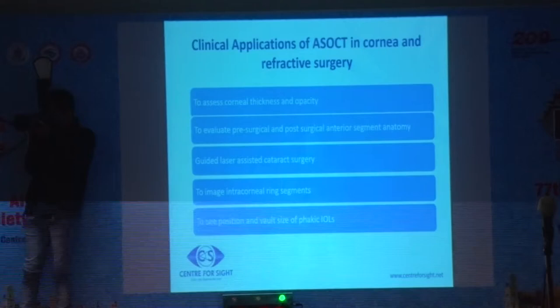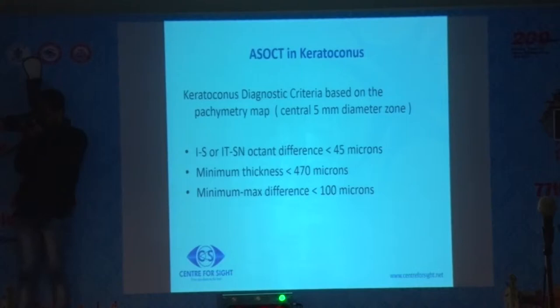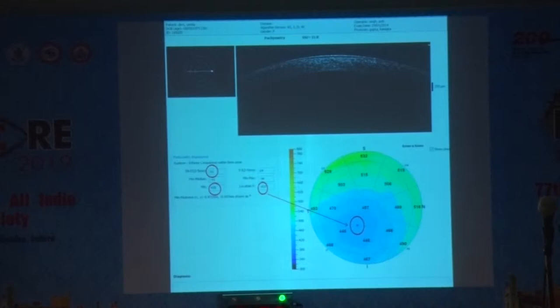OCT can diagnose keratoconus based upon four criteria in the central 5 mm pachymetry zone. We look at the inferosuperior and inferotemporal to superonasal quadrant difference in pachymetry, minimum thickness of cornea, and minimum to maximum difference. This is how keratoconus looks on the cornea and we look at these criteria to diagnose it.